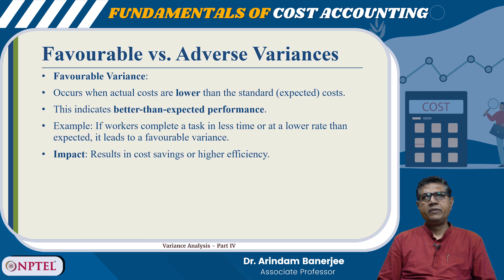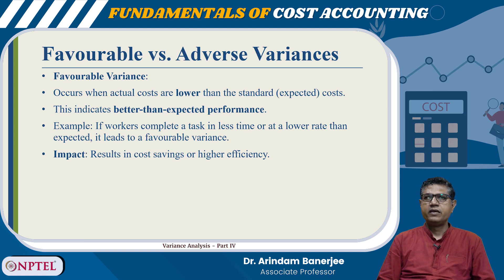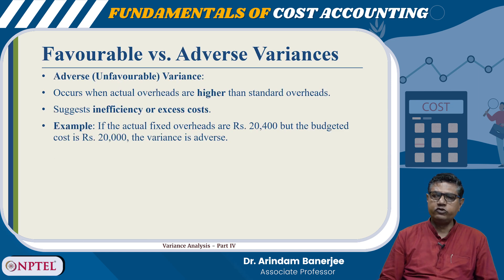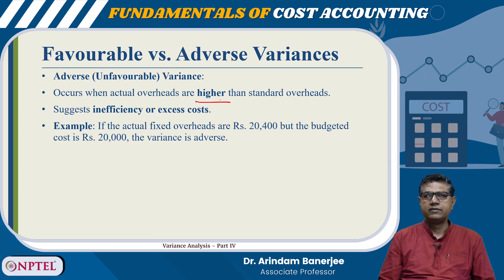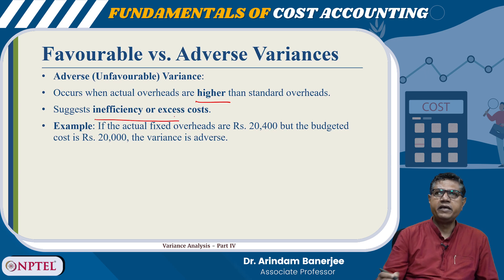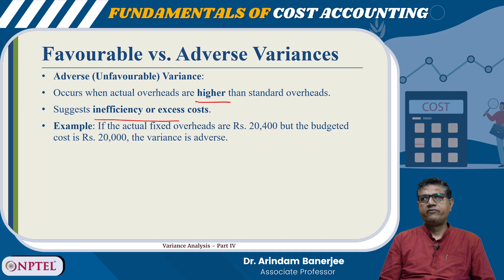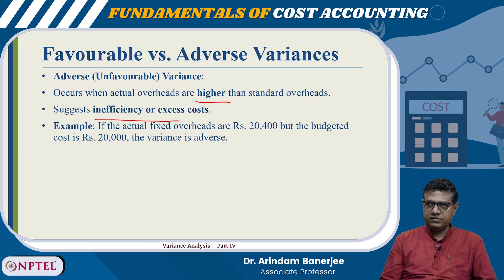The variance is favourable when the actual costs are lower than the standard costs. This indicates better than expected performance. If workers complete a task in less time or at a lower rate than expected, it leads to favourable variances, resulting in cost savings or higher efficiency. The adverse variance occurs when the actual overheads are higher than the standard overheads, suggesting inefficiency and excess cost. For example, if the actual fixed overheads are rupees 20,400 but the budgeted cost is rupees 20,000, the variance is adverse.